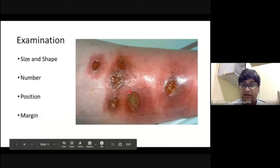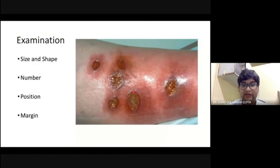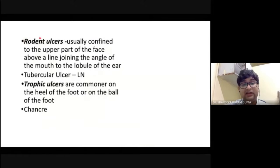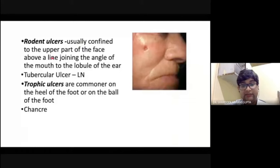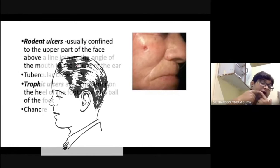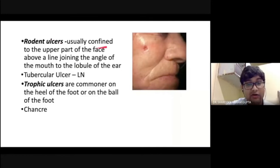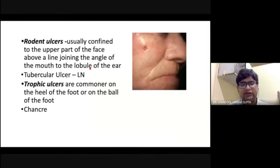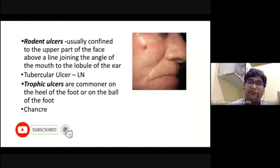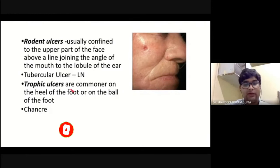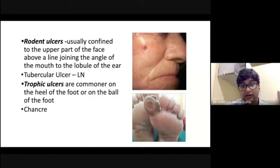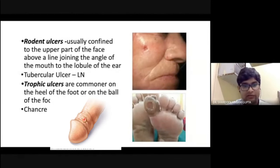The margin is between normal and abnormal epithelium. The peculiarity of rodent ulcer is that it is usually confined to the upper part of the face, above the line joining the angle of the mouth to the lobule of the ear — it is called rodent because it appears as if a rodent has bitten the face. Tubercular ulcers are usually positioned at the site of lymph nodes like cervical or inguinal. Trophic ulcers are common on the heel or ball of the foot where there is repeated pressure.